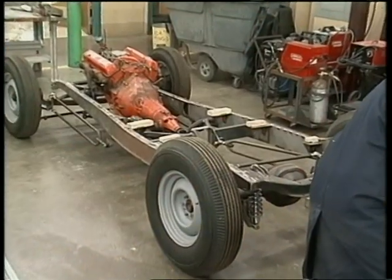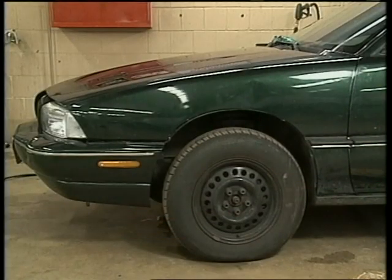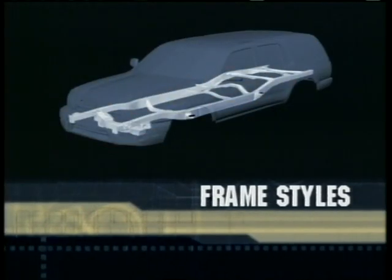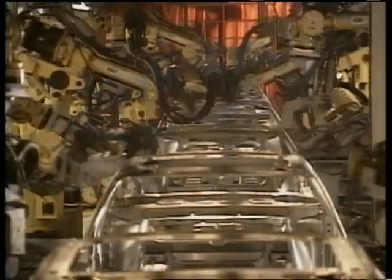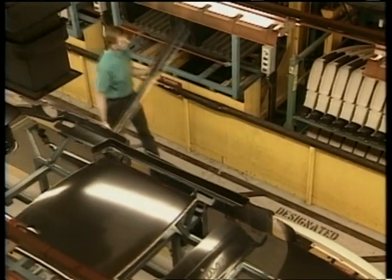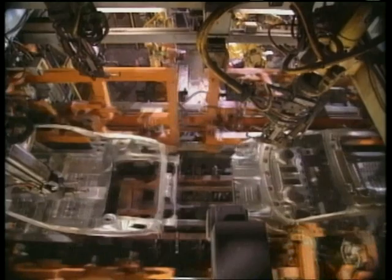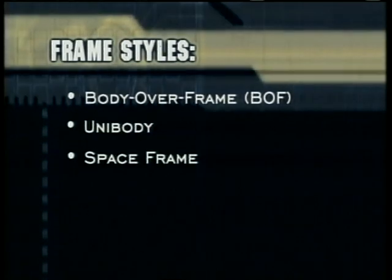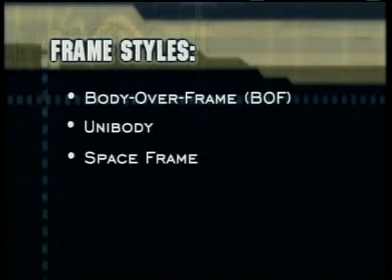First, we'll take a look at the three most common types of frames that are in use today. You'll find out about the different sections of a vehicle and the major parts and assemblies included in each. In the process, we'll talk a little bit about how vehicle construction impacts our work as auto body repair technicians. The frame of a vehicle is its foundation — kind of like the foundation of a house. All other parts and assemblies are attached directly or indirectly to the frame. There are three basic frame styles: body over frame or BOF, unibody, and space frame. Each has its advantages and challenges for repair.